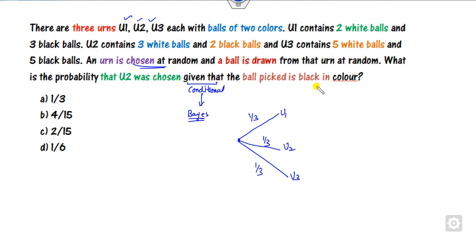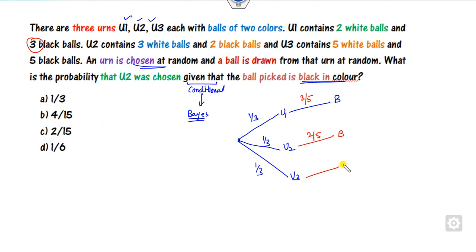Now, which ball do you want to pick? It's the black color. What is the probability of picking the black ball from the first bag? Since there are three black balls and two white balls, the total probability is three by five. Similarly, from the second bag it's two by five, and from the third bag it's five by ten. The rest is simply to multiply these: three by fifteen, two by fifteen, and five by thirty.